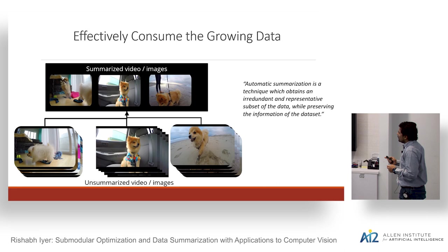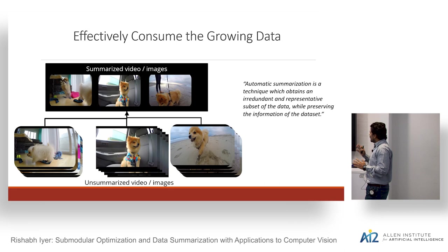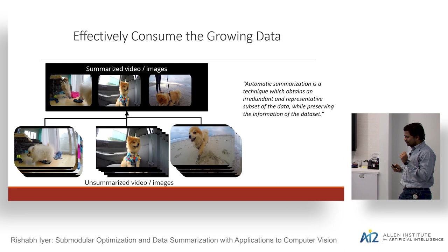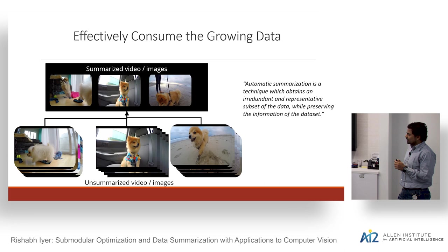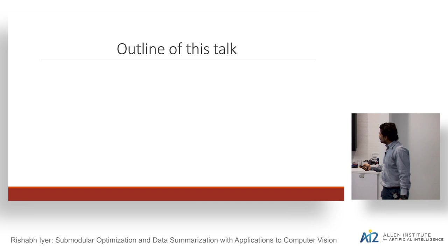We'll mainly look at a few applications around video summarization. The idea is that we often have different intuitions of what it means to have a visual summary — it's somewhat of an ambiguous problem unless you know the domain where you want to use it. We'll try to build intuition towards a family of summarization models, and towards the end cover a unified learning framework that can learn these for different problems.